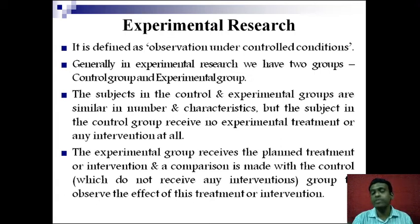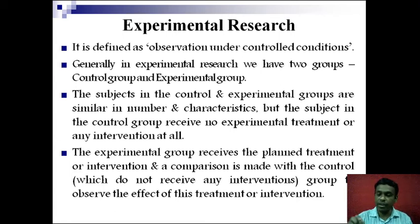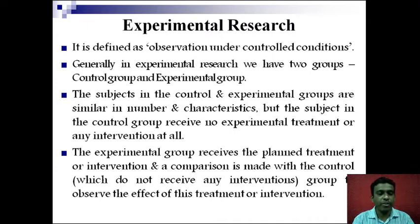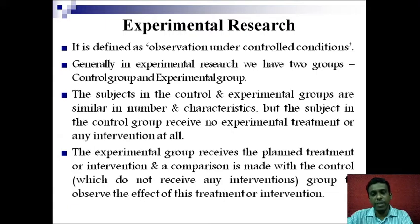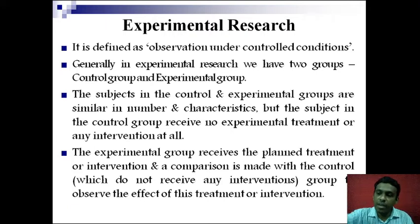The experimental group is the only group that is receiving intervention, treatment or modifications. If we observe the effect of this treatment or intervention and find out the difference between the outcome of the experimental group and the control group, then this difference can be attributed to the treatment. The difference in outcome between the control group, which received no treatment or modifications, and the experimental group, which received some treatment, is only because of the treatment given.